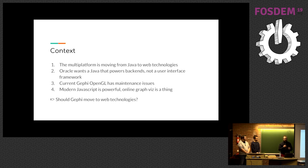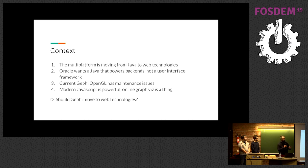I need to talk about the context on why we are in this situation right now. Basically, the multi-platform is moving from Java to web technology. The browser is now the new multi-platform. This is an effect of multiple factors, but one of them is the policies of Oracle. They want Java to be more a back-end thing and less a front-end thing, so there are less and less user interface features in Java.